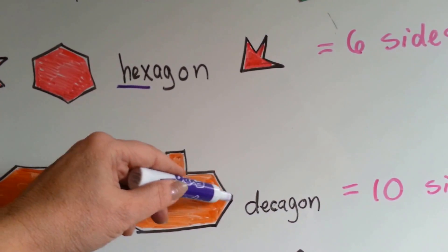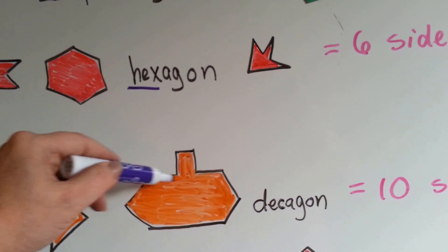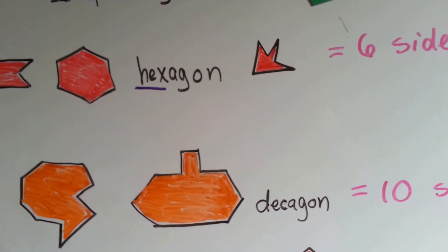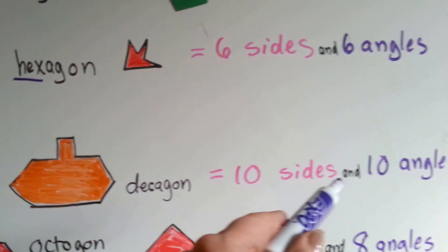And one, two, three, four, five, six, seven, eight, nine, ten angles. Ten sides and ten angles.